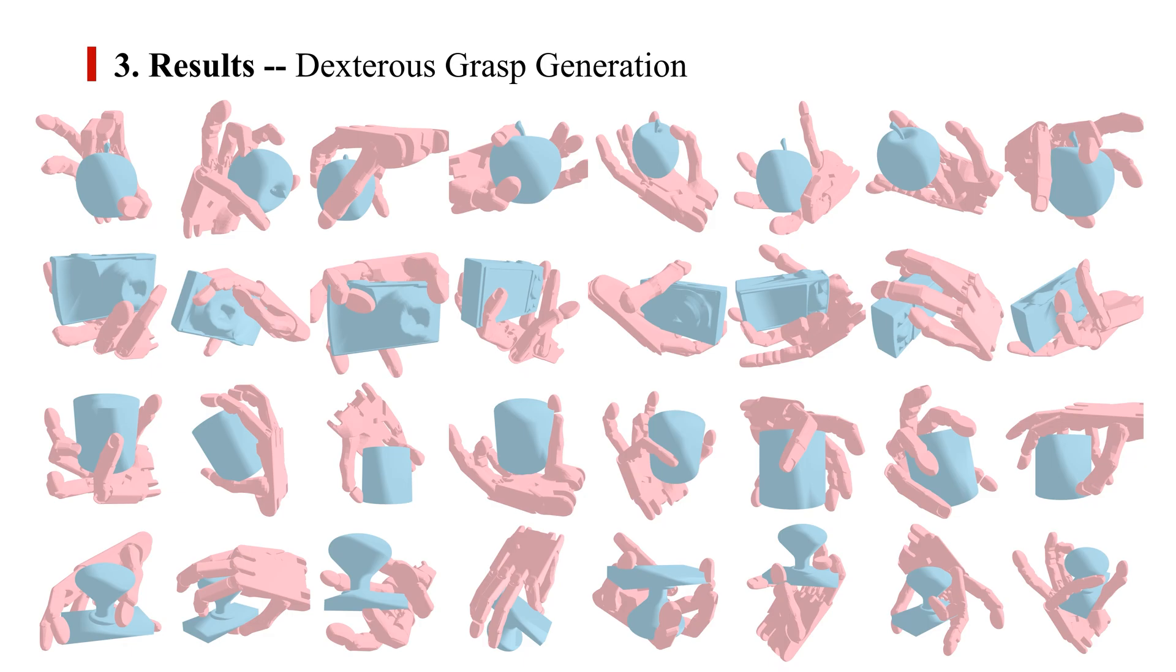We show some selected generated grasps for apple, camera, cylinder, and doorknob in the grasp generation task. The visualized results show that the Scene Diffuser can generate diverse and physically plausible grasps conditioned on different unseen objects.